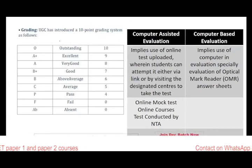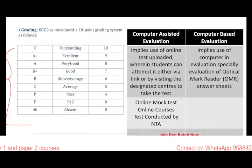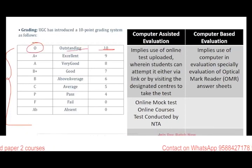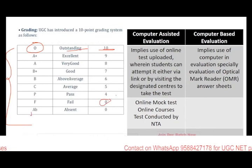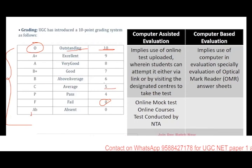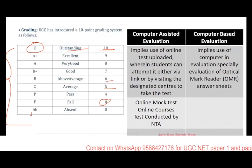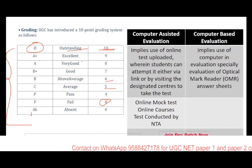You should know the grading system: O stands for outstanding with a grade point of 10; A+ is excellent — 9; A is very good — 8; B+ is good — 7; B is above average — 6; C is average — 5; P is pass — 4; and F stands for fail with zero for absenteeism.